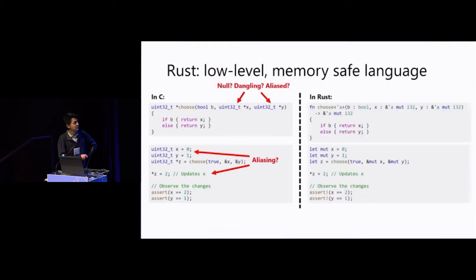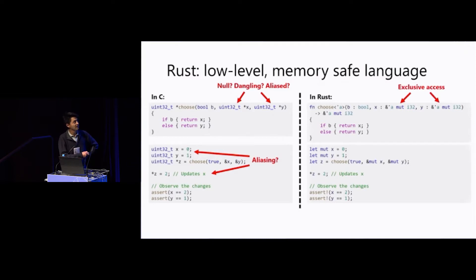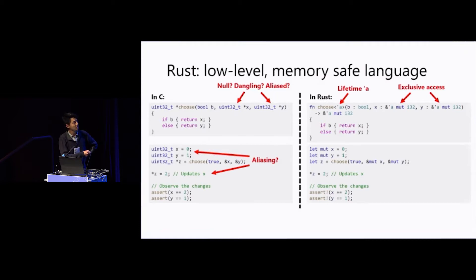In Rust, an equivalent snippet of code would look like this. The 'choose' function is basically the same as in C, except that instead of using pointers we use what we call borrows — in this case, mutable borrows. A mutable borrow is typically a pointer, but it gives you exclusive access to the value it points to, so x and y are necessarily non-null and non-dangling, and because they give exclusive access they cannot alias each other. There is also a lifetime annotation used to constrain how long those borrows are valid.